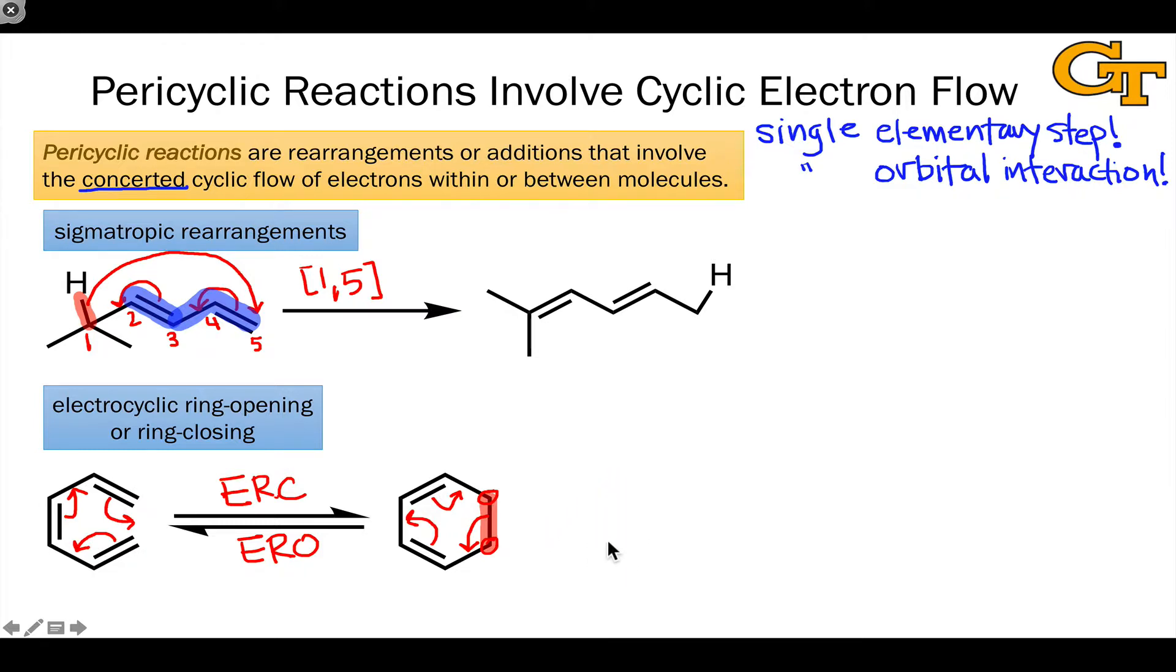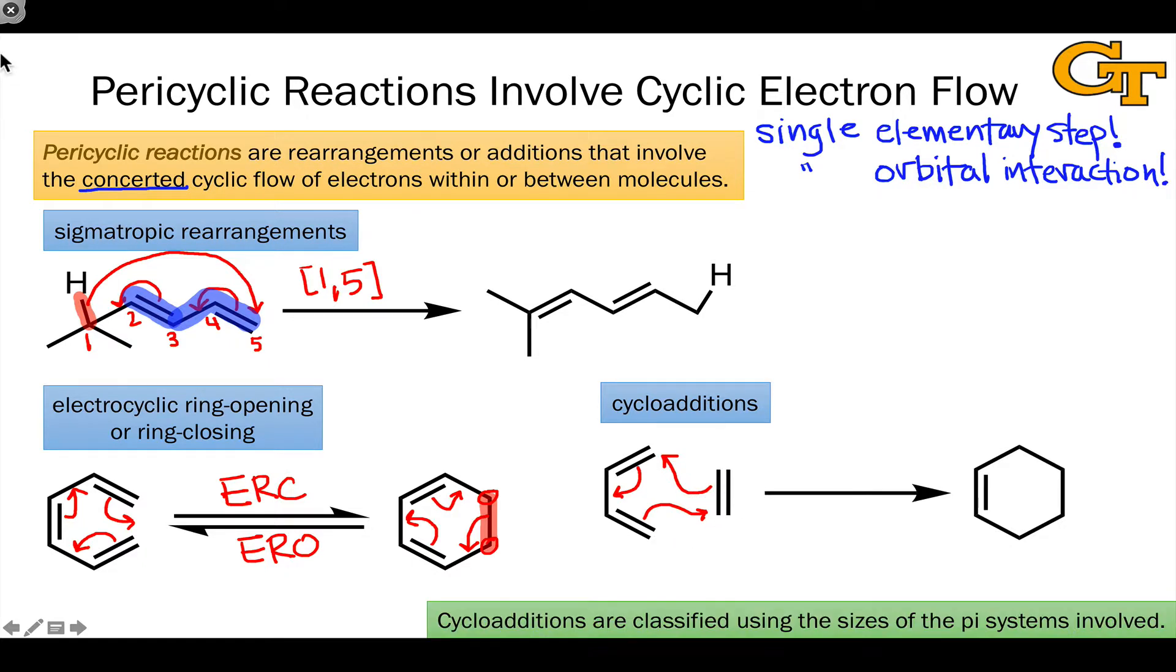Where we're going to focus our attention in this series of videos is on cycloadditions. Cycloadditions are similar to electrocyclic ring closing reactions, except now two distinct pi systems are coming together through cyclic electron flow that forms two bonds at once. We can classify different types of cycloaddition reactions based on the number of atoms involved in each of the pi systems.